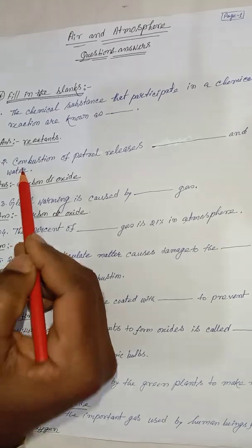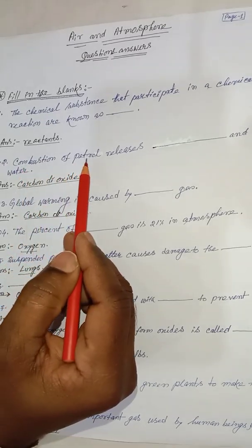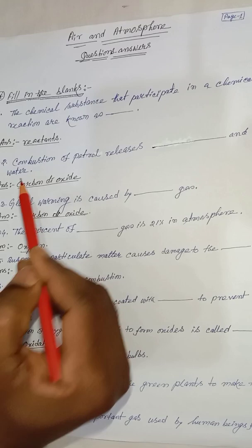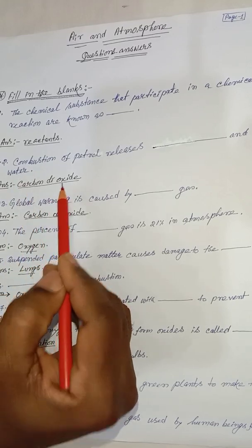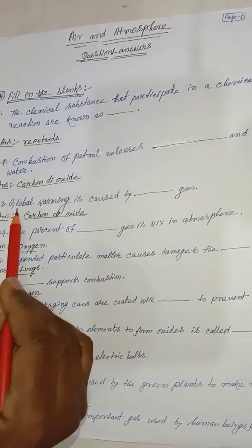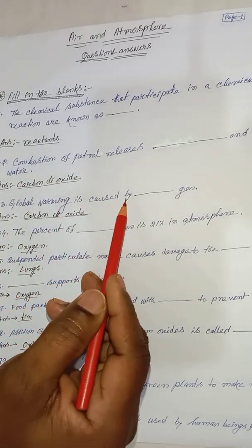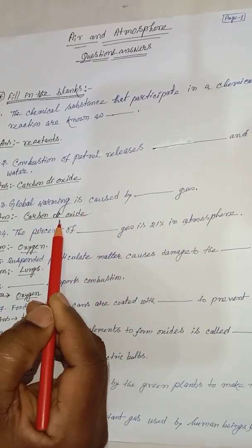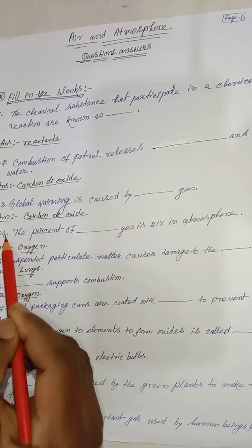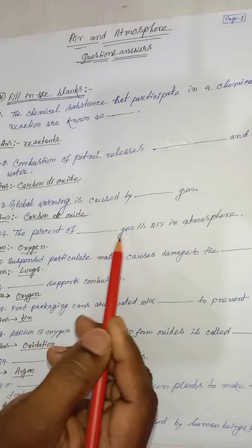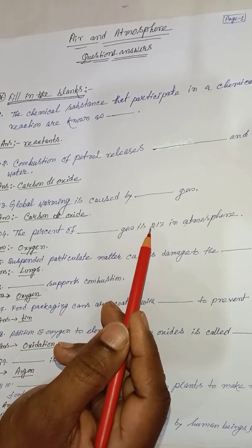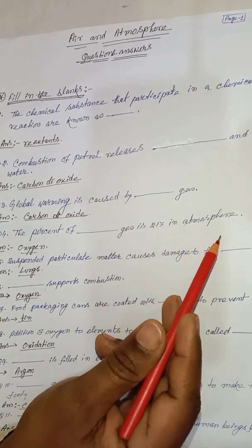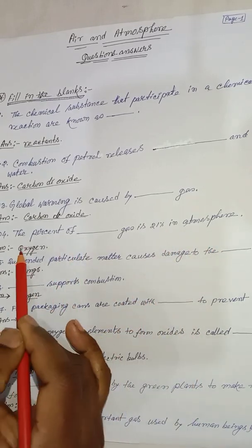Next, combustion of petrol releases carbon dioxide and water. Global warming is caused by carbon dioxide. The percentage of oxygen in the atmosphere is 21%.